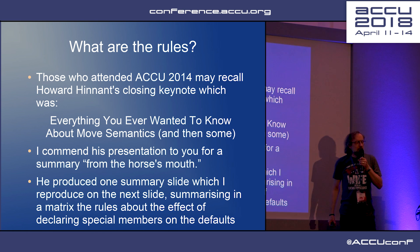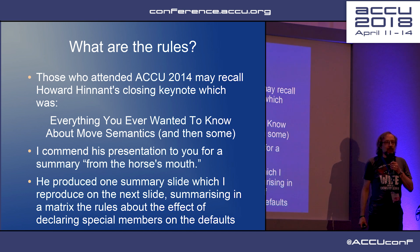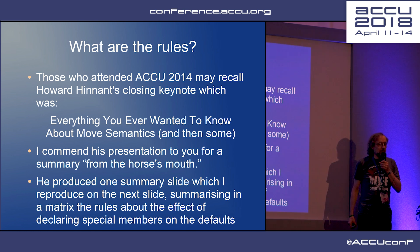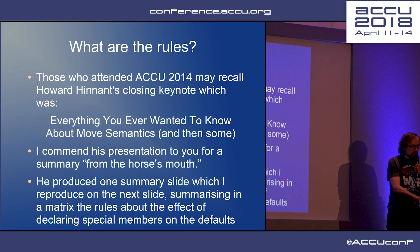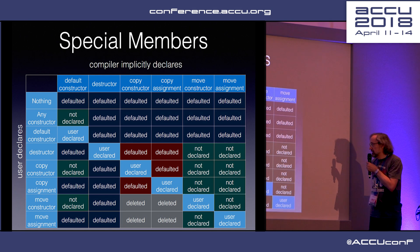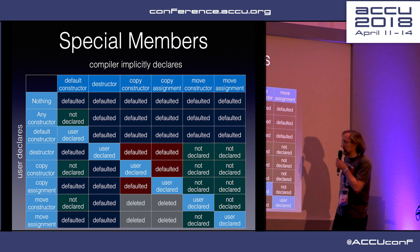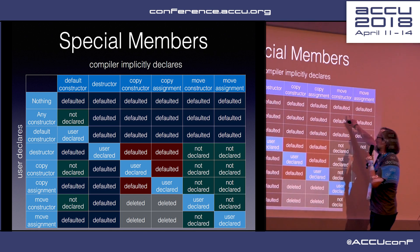Who was here for the closing keynote four years ago? Howard Hinnant gave a talk about all you ever wanted to know about move semantics — it's still on the ACCU conference YouTube site. He produced a one-slide matrix of all the special members: if I declare, as a user, one of these, what happens to the compiler-generated everything else? The best thing is to be in the top-left corner where everything is defaulted. By the time you get down to writing your own move assignment, just bad, complicated things happen that are very hard to remember.